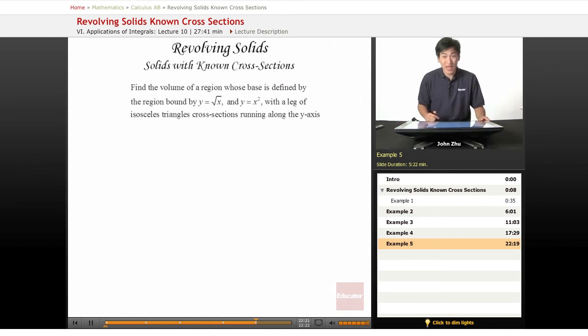We've got another problem, and this time we might have a really weird shape. Find the volume of a region whose base is bound by y equals square root of x and y equals x squared, with a leg of isosceles triangles cross-sections running along the y-axis.